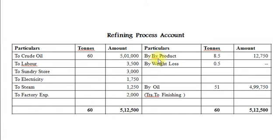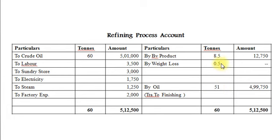On the credit side: by-product 8.5 tons, realized value Rs. 12,750. Then oil produced at the end of refining process: 51 tons, transferred to finishing process. The debit side total is 60 tons; credit side has 8.5 tons and 51 tons. The balancing figure of 0.5 tons is considered as weight loss with no value, as no other information is given.